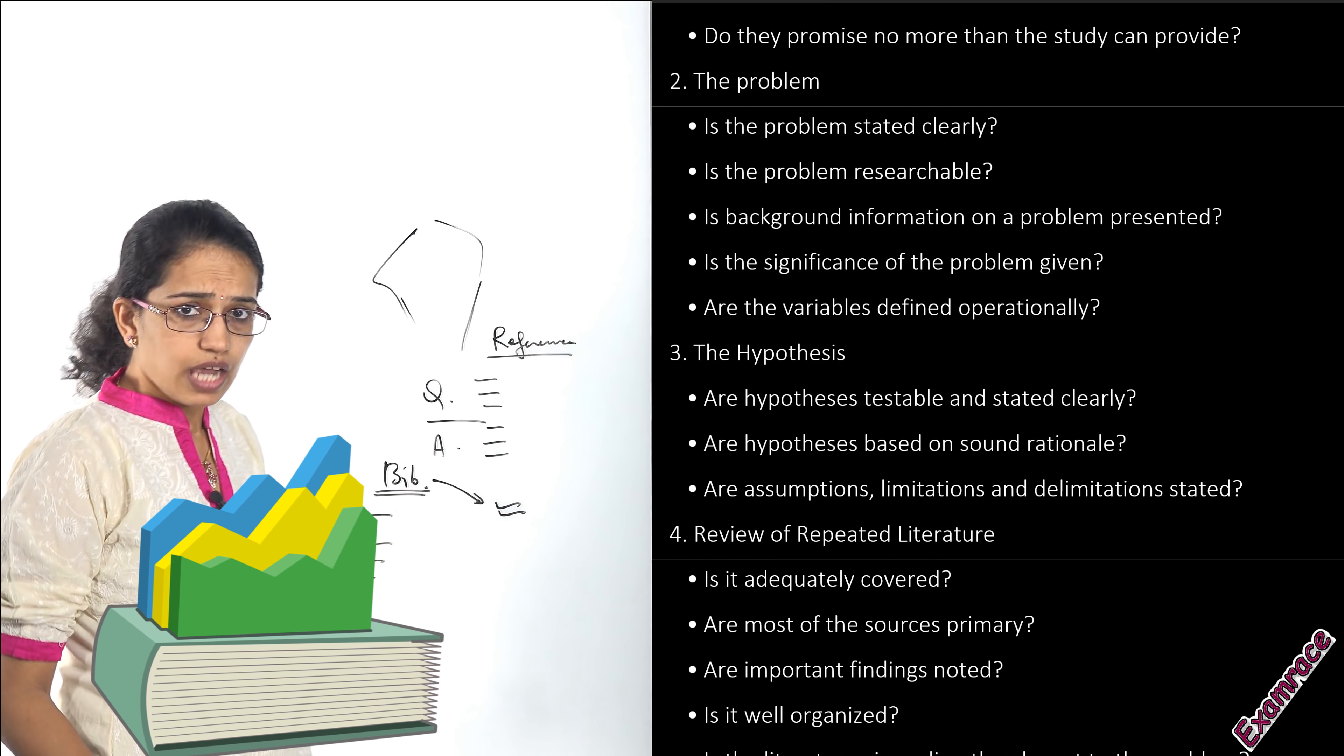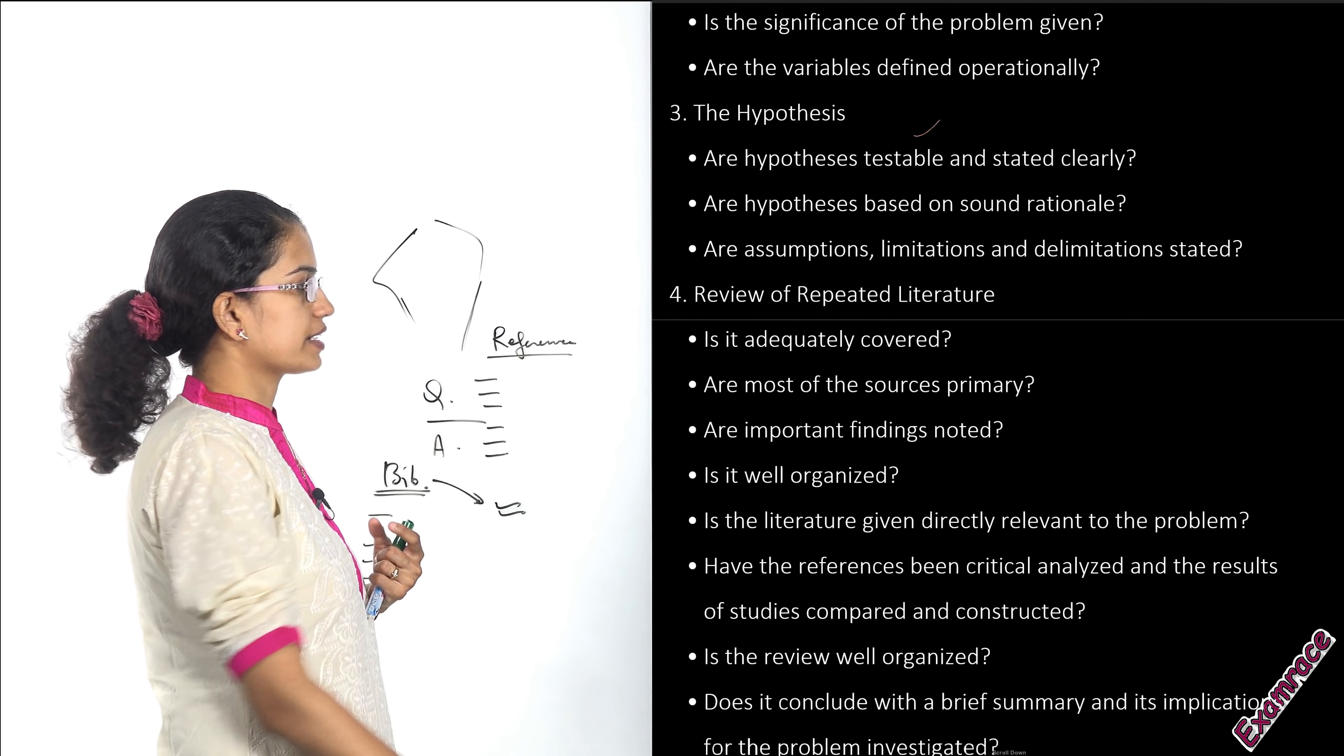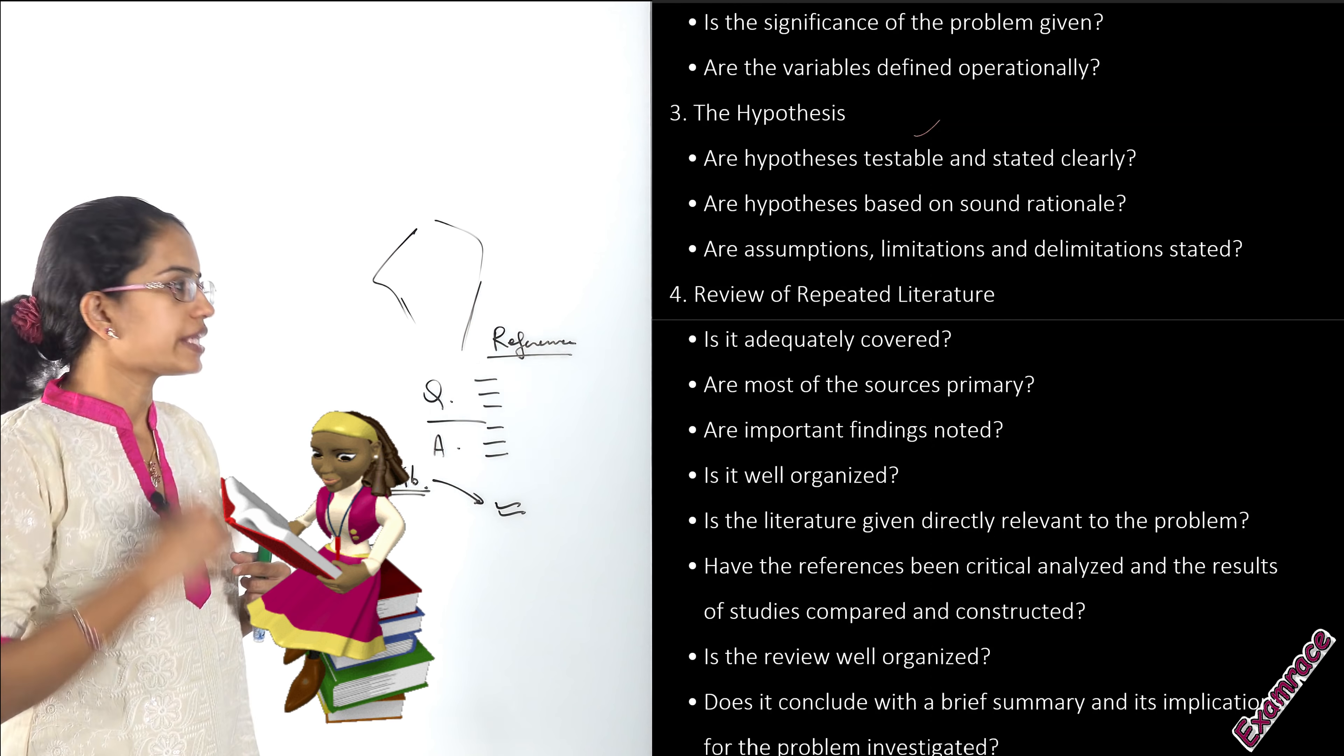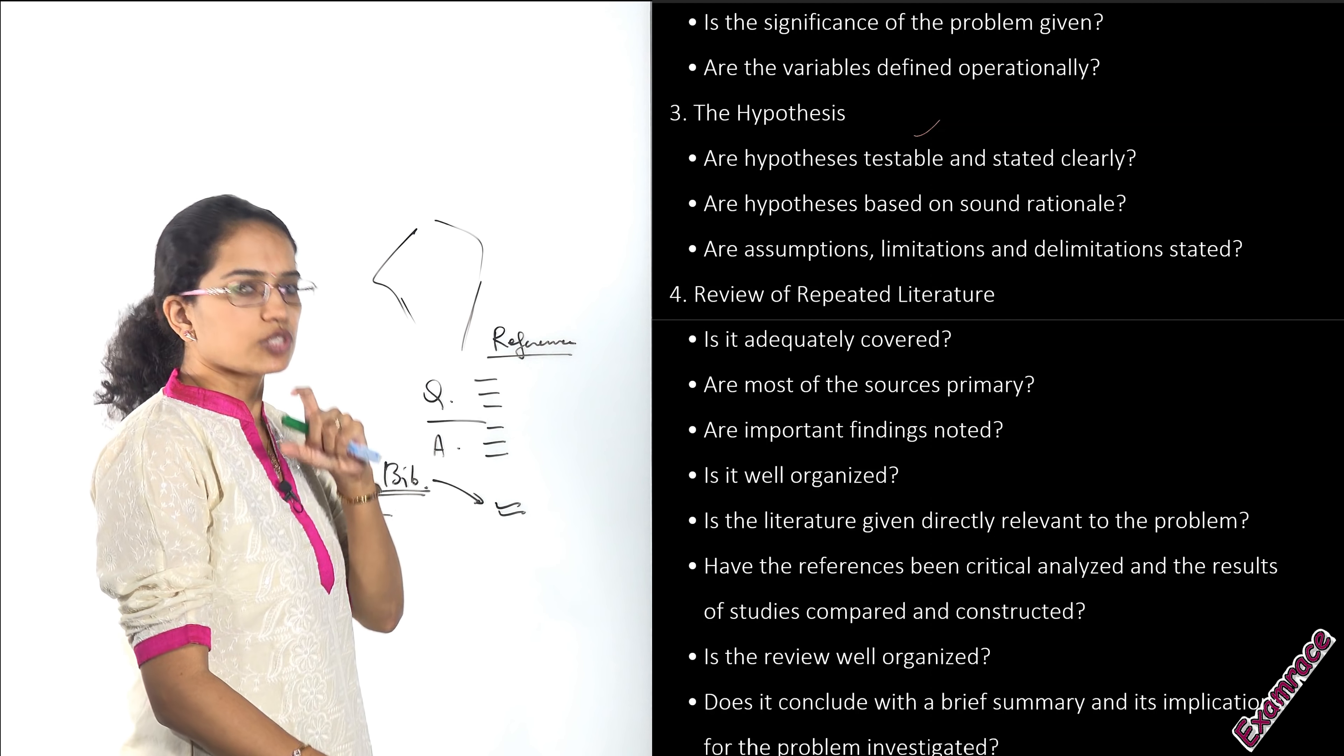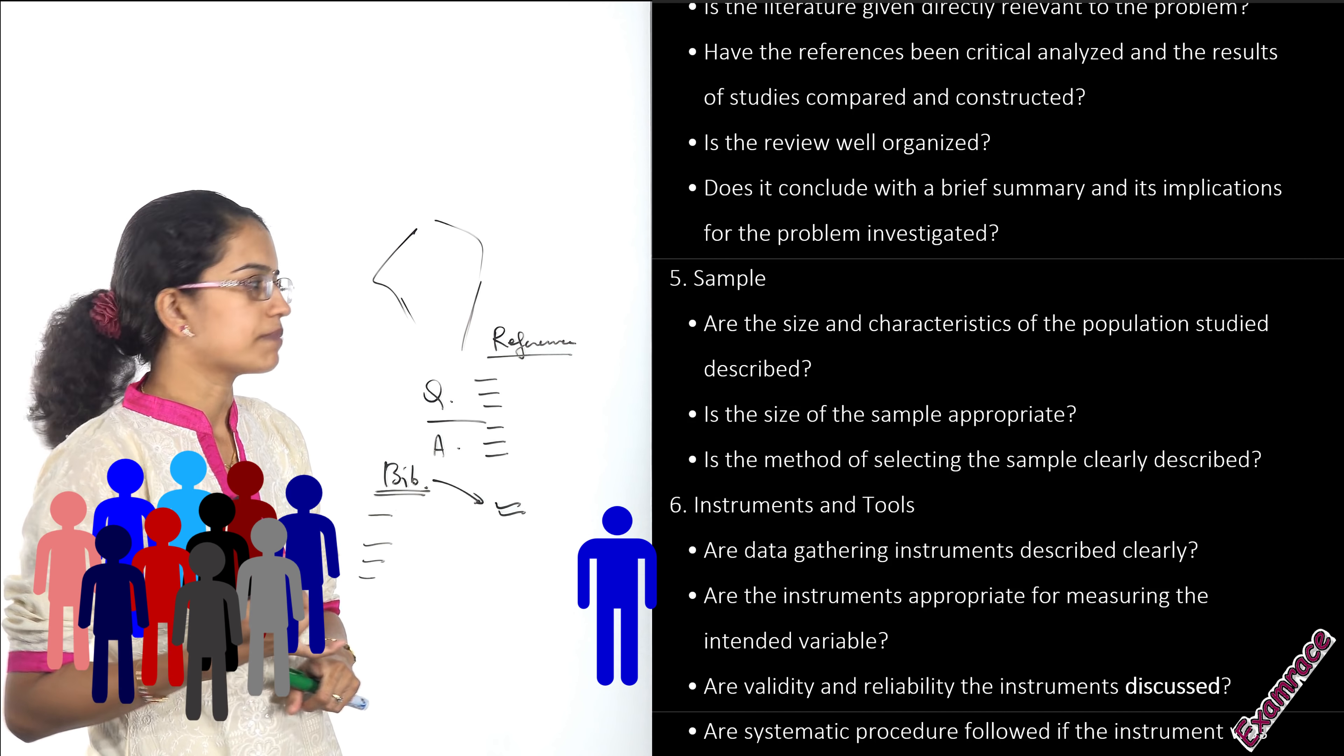Then we will check the hypothesis—how the hypothesis is propounded, whether we can test the hypothesis, are there limitations or delimitations. We will do a review of literature to check whether all the sources mentioned in the references have been covered, whether the sources are primary, whether important findings are missing. Then we would check the sample—whether the size is appropriate, the technique of sampling is correct, and whether the goals are clearly mentioned.